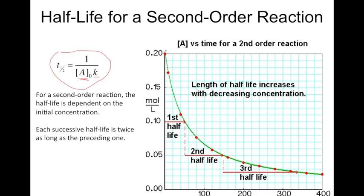Looking at the graph: starting at an initial concentration of 0.2 molar and reducing to 0.1 molar, the first half-life is about 50 seconds. The second half-life — from 0.1 molar down to 0.05 molar — should be about 100 seconds, which is double the first. The half-life doubles as the concentration decreases, and that doubling of the half-life length is a hallmark of a second-order reaction.